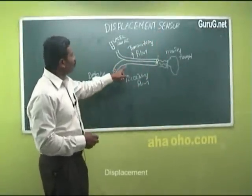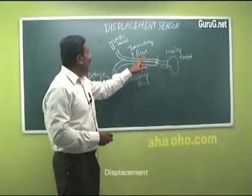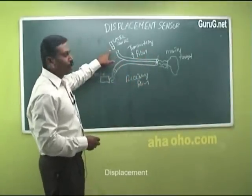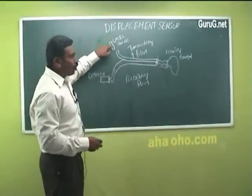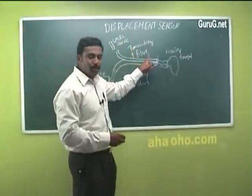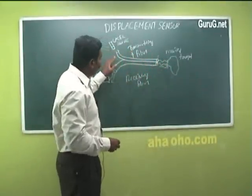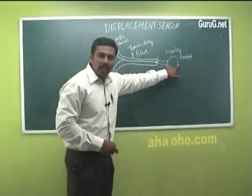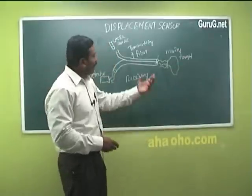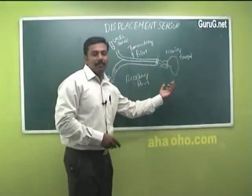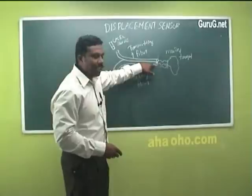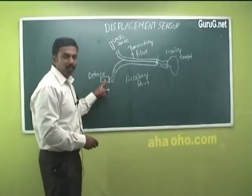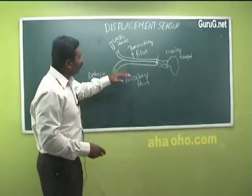The displacement sensor is an extrinsic sensor. It consists of a bundle of transmitting optical fibers and a bundle of receiving optical fibers, and a laser is used as the source. The laser light is passed through the transmitting optical fiber and strikes a moving target. After striking the moving target, the light is reflected and received by the receiving optical fiber, then fed to a detector.